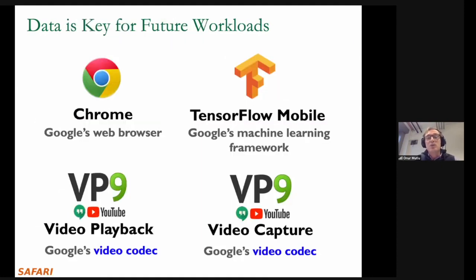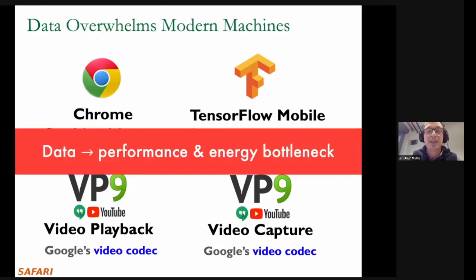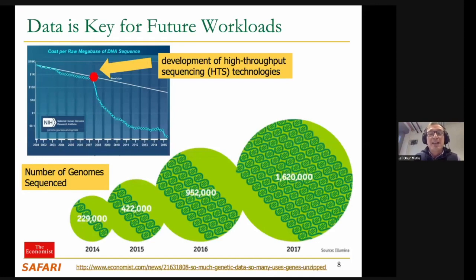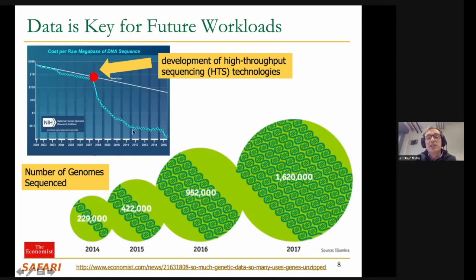There are also many edge applications that are equally important and consume a lot of data. As a result, data becomes a performance and energy bottleneck. In genomics, for example, we can today sequence many more genomes than we can analyze. Data becomes a huge bottleneck because today's genome sequencing machines are very powerful, and their costs in terms of sequenced genome per dollar is reducing much faster than Moore's law has been reducing for decades, as you can see with this graph.